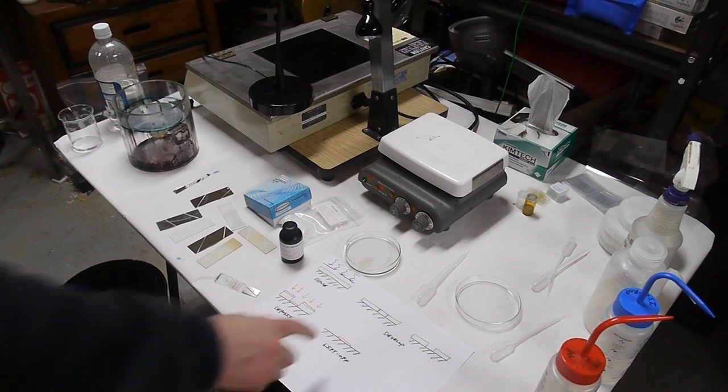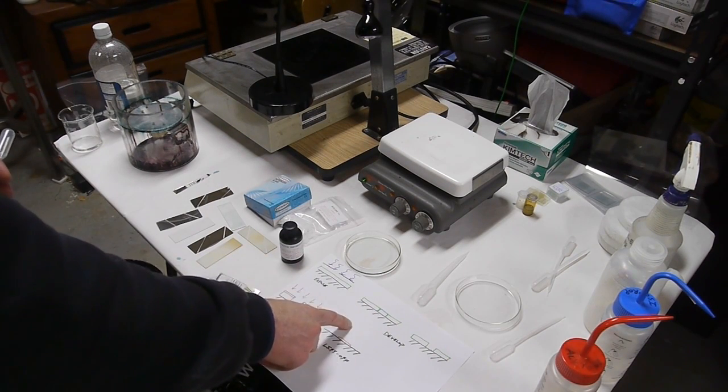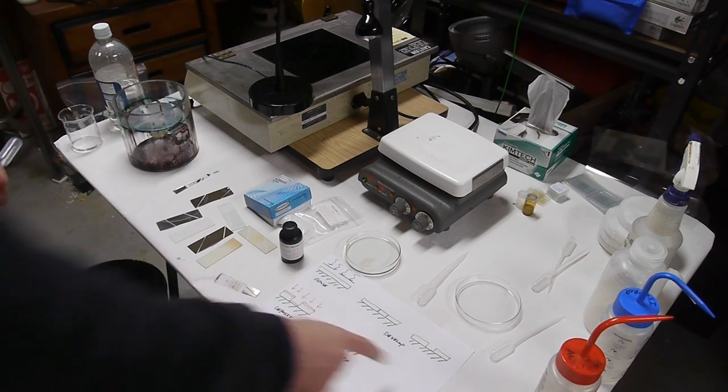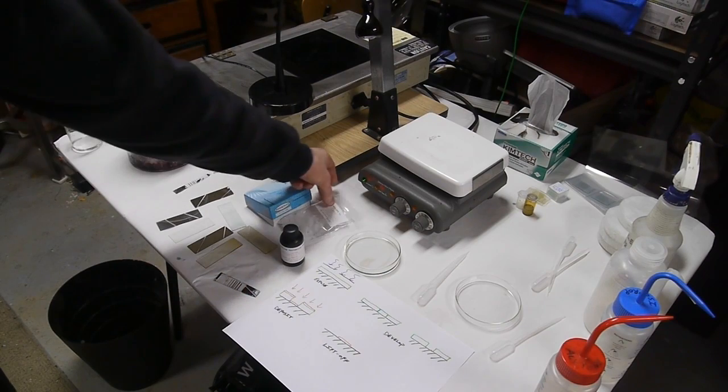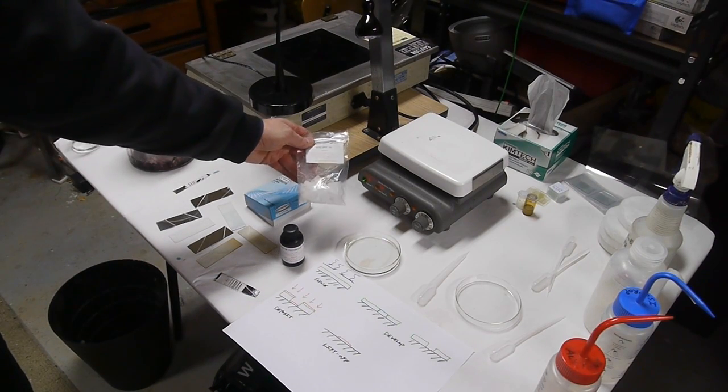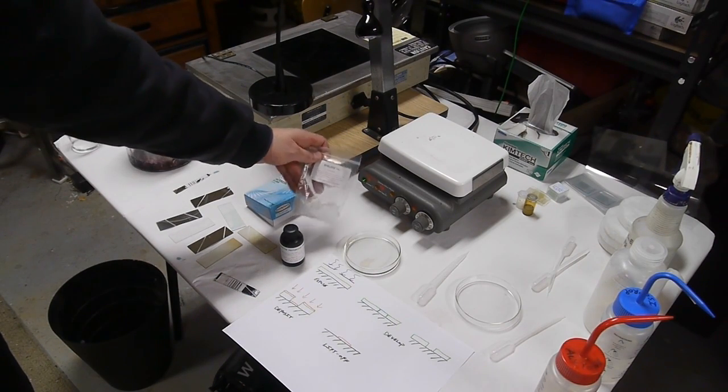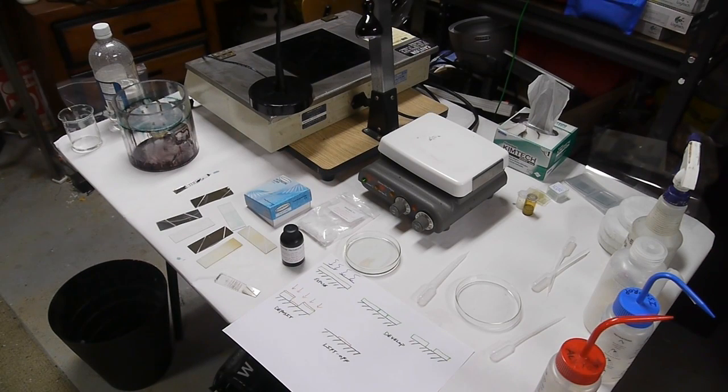Next, what we want to do is get rid of the resist that we exposed to UV, so we develop it. The same seller that was selling this on eBay also was selling an unlabeled developer, these mystery crystals, which I'm pretty sure are sodium hydroxide.